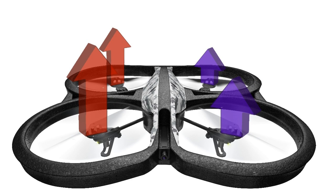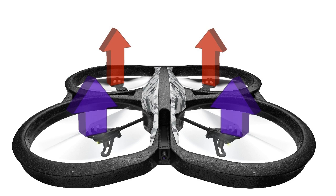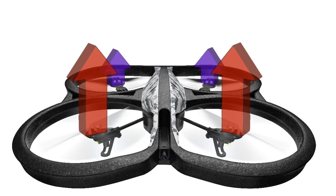To roll back to our right, the drone will reverse the process. To pitch forward, the drone will increase power to the two back motors and reduce power to the two front motors. The resulting net force will pitch the nose of the drone down and it will move towards us. To pitch backwards, away from us, the drone will reverse the process.